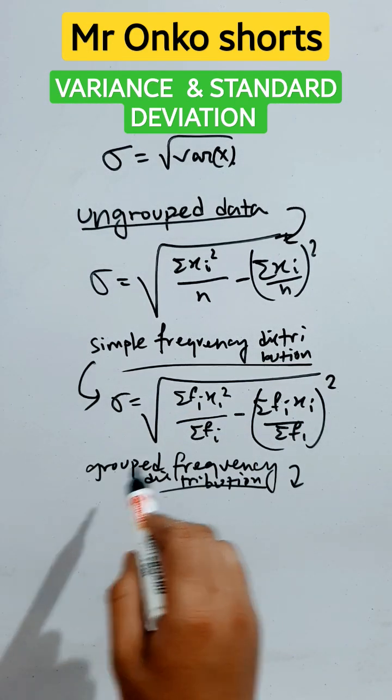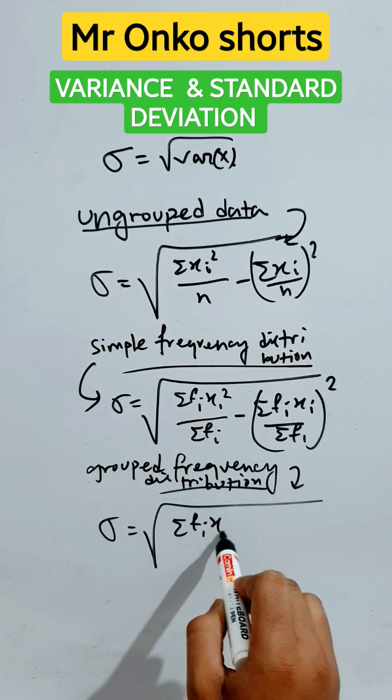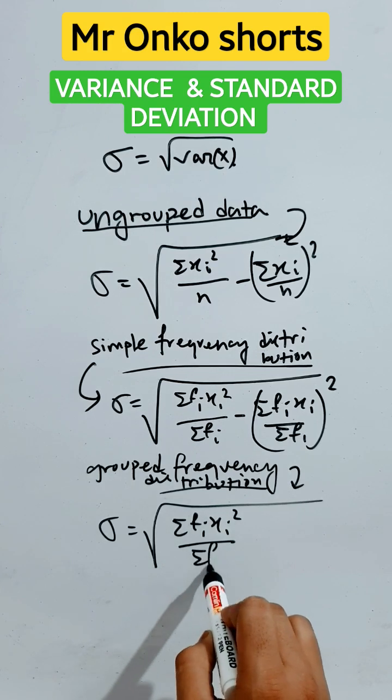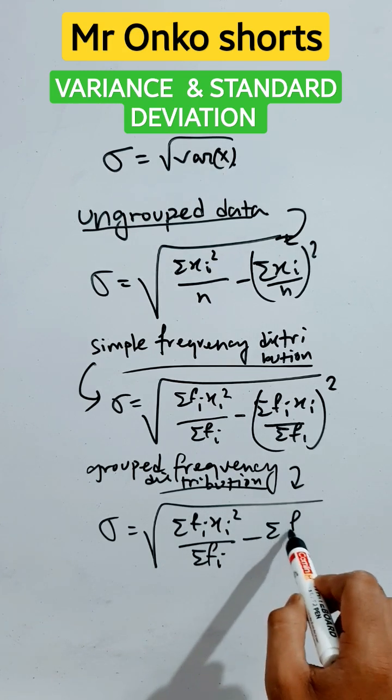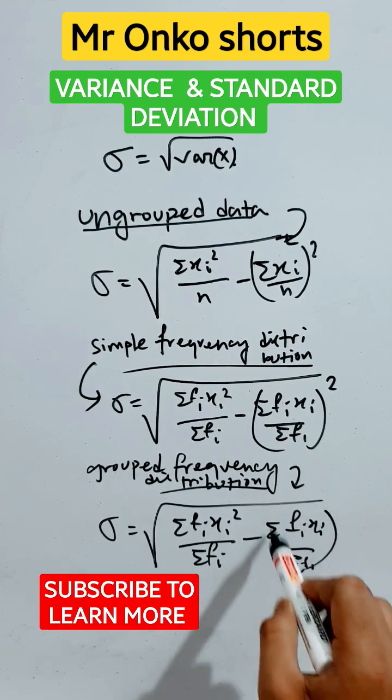For grouped frequency distribution, it will be the square root of summation of fi xi squared divided by summation of fi minus summation of fi xi by summation of fi whole squared.